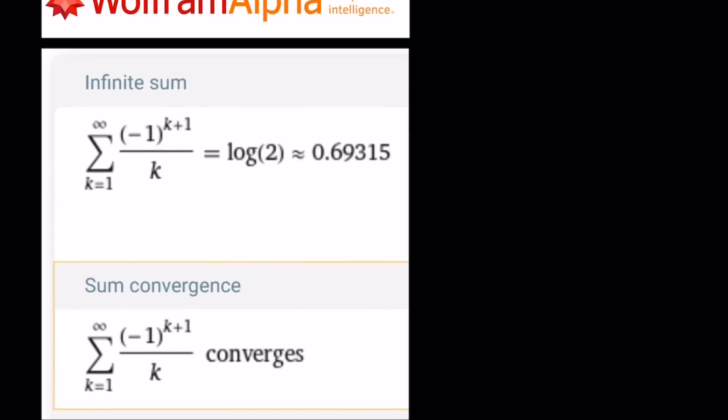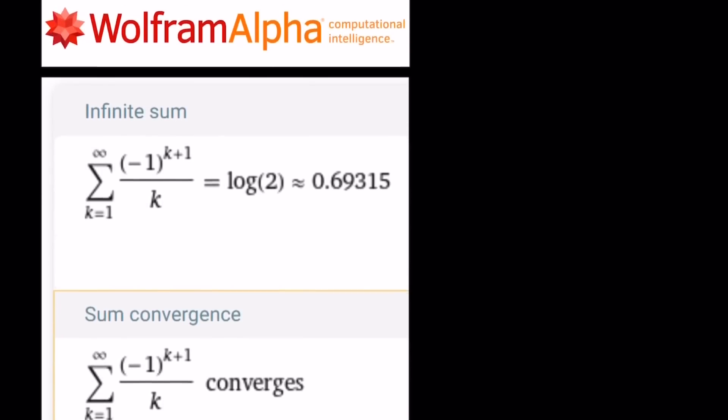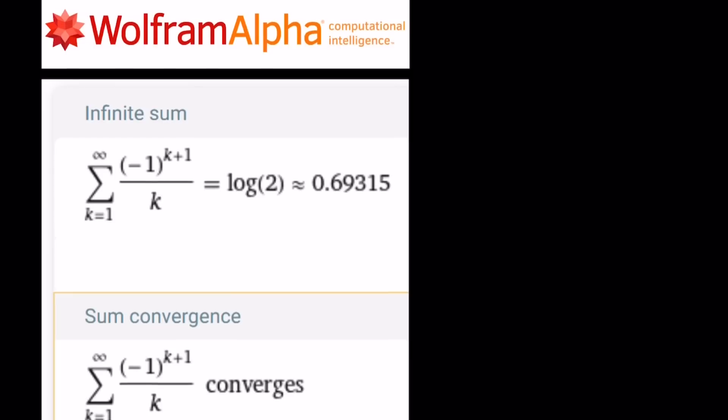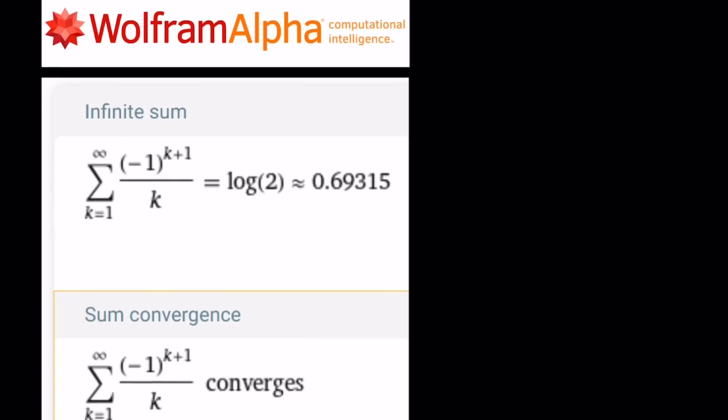So according to Wolfram Alpha, which is a really cool tool if you're studying math, this sum, as I told you earlier, we can use sigma to write this, is equal to ln 2, but unfortunately Wolfram Alpha writes this as log, and that's approximately 0.69315.